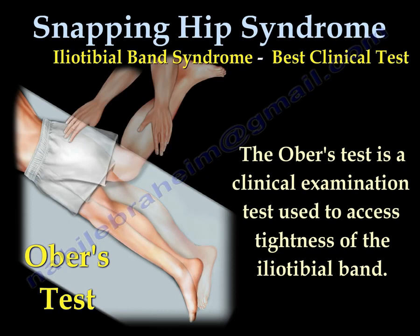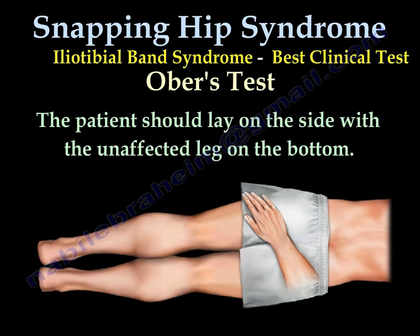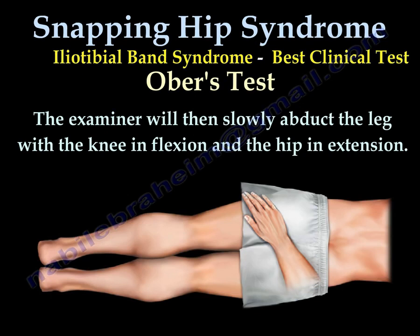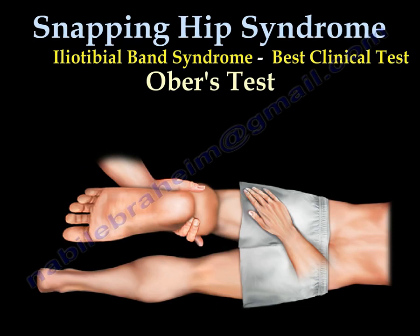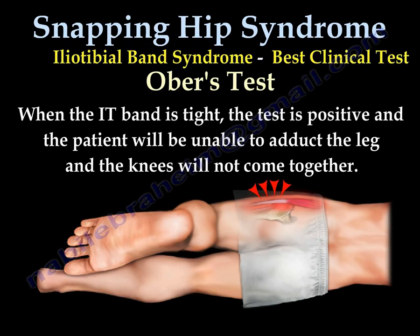To perform Ober's test, the patient lies on the side with the unaffected leg at the bottom. The examiner abducts the leg and extends the hip, then allows the leg to lower. If the test is positive, the patient cannot abduct the leg past anatomic neutral — because the iliotibial band is tight, the knees will not come together.